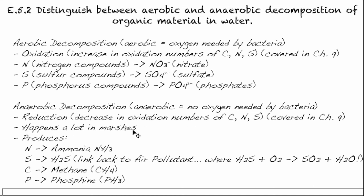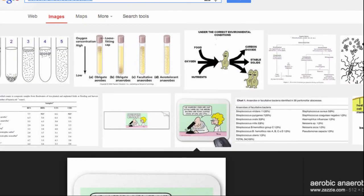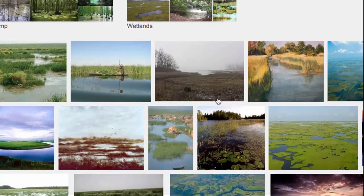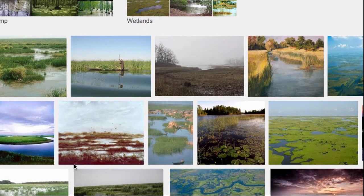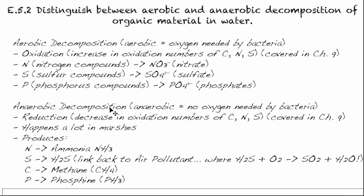This happens a lot in marshlands, which is sort of standing water — just to do a quick little visualization of marshlands. These types of areas are where you get a lot of anaerobic decomposition. In these cases, the bacteria will convert nitrogen compounds into ammonia and sulfur compounds into hydrogen sulfide.